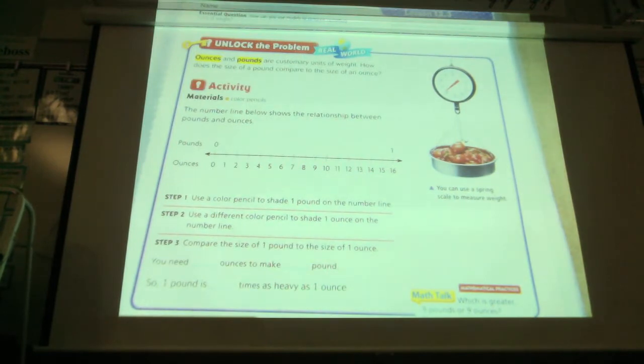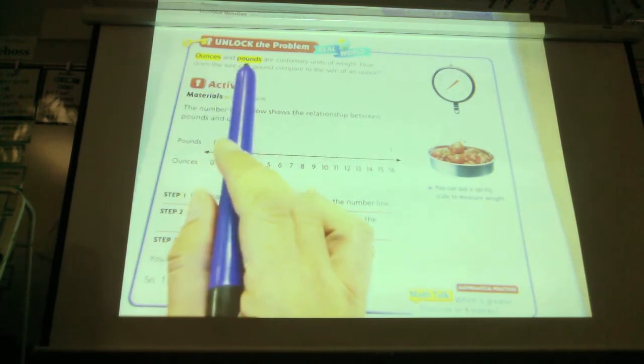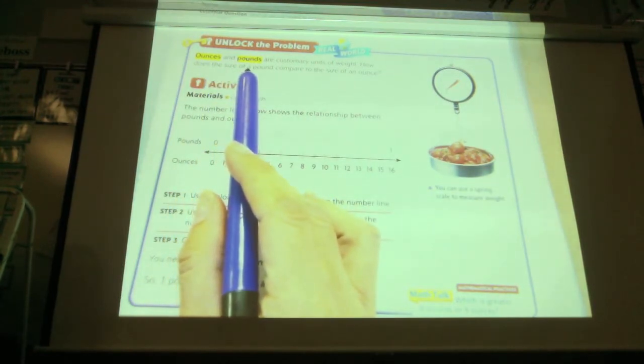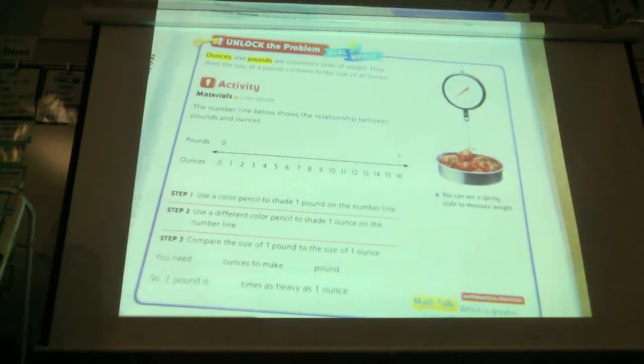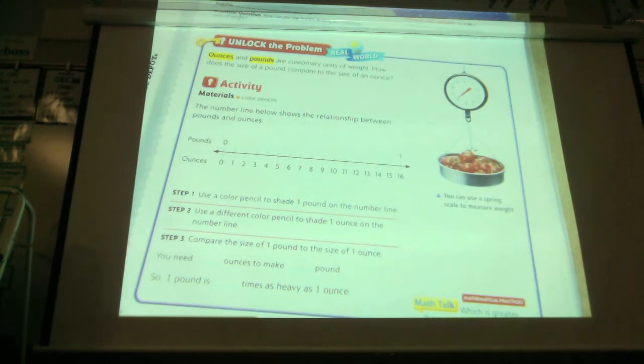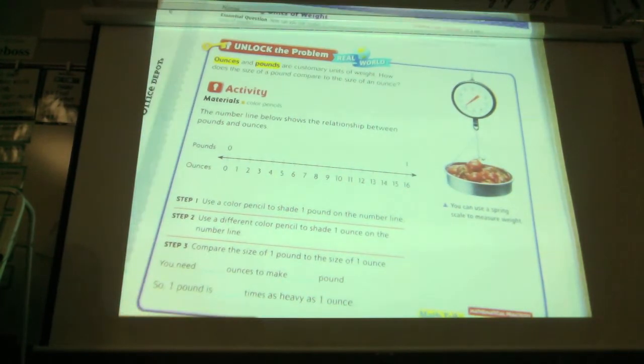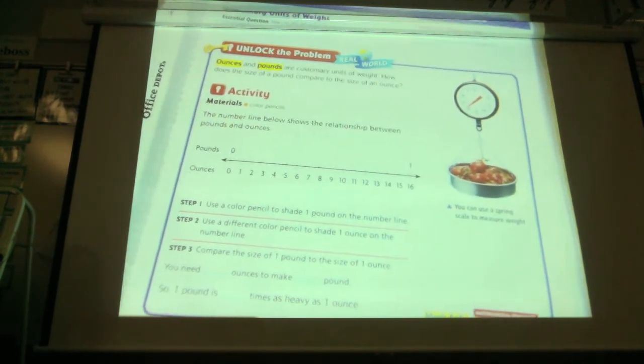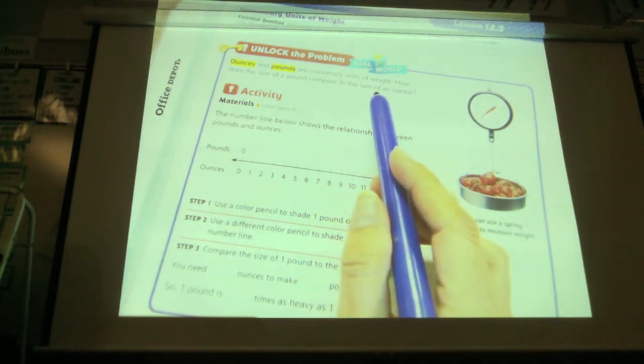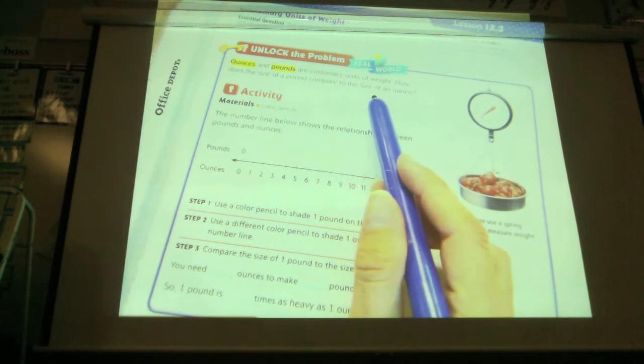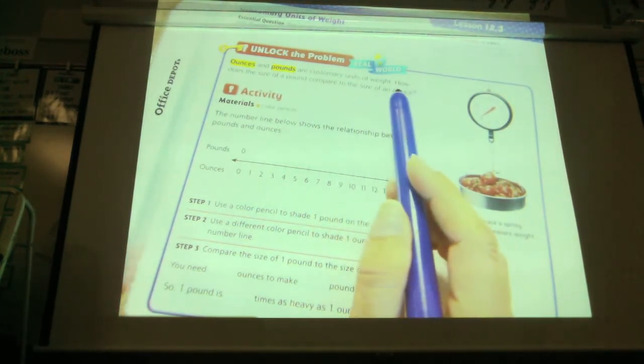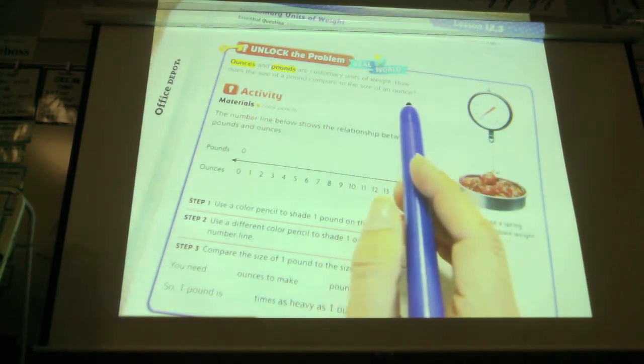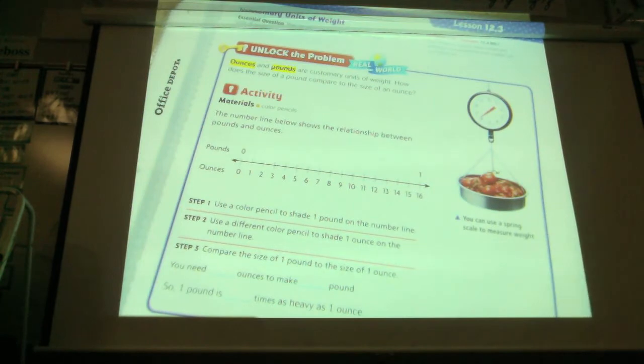So we have ounces and pounds are the measurements that we're talking about right now. Which one is heavier, an ounce or a pound? A pound. Do we remember what our benchmark was for a pound? A loaf of bread. So the benchmark we used for a pound was a loaf of bread. What was the benchmark we used for an ounce? Five pencils. We know that a loaf of bread weighs more than five pencils. They are customary units. They're not metric. Metric mass units are things like grams and kilograms. Customary are ounces and pounds. And then we decided how does the size of a pound compare to an ounce? Well, we know that a pound is heavier because we know a loaf of bread is heavier than five pencils.